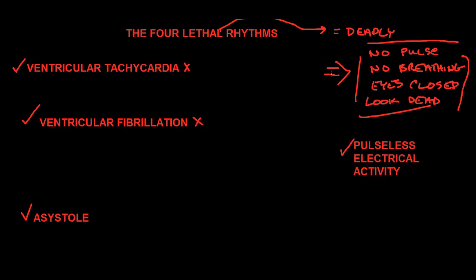If they are in ventricular tachycardia or ventricular fibrillation, the heart cannot stay in that state for very long because it's not feeding itself oxygen. When the heart cells don't get oxygen, they won't make any of the electricity in VTAC or VFib. So if you're in VTAC and you don't get out of it pretty soon, you'll go into VFib, and if you don't get out of that pretty soon, you will go into asystole.